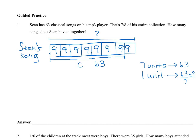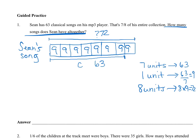The question is asking me how much are they all together. I want to figure out what one, two, three, four, five, six, seven, eight units is worth. So eight units give me — what am I doing to get from one to eight? I'm multiplying by eight, so I'll multiply nine times eight as well. And what do I get? 72. So to answer the question, how many songs does Sean have all together? Sean has 72 songs all together.